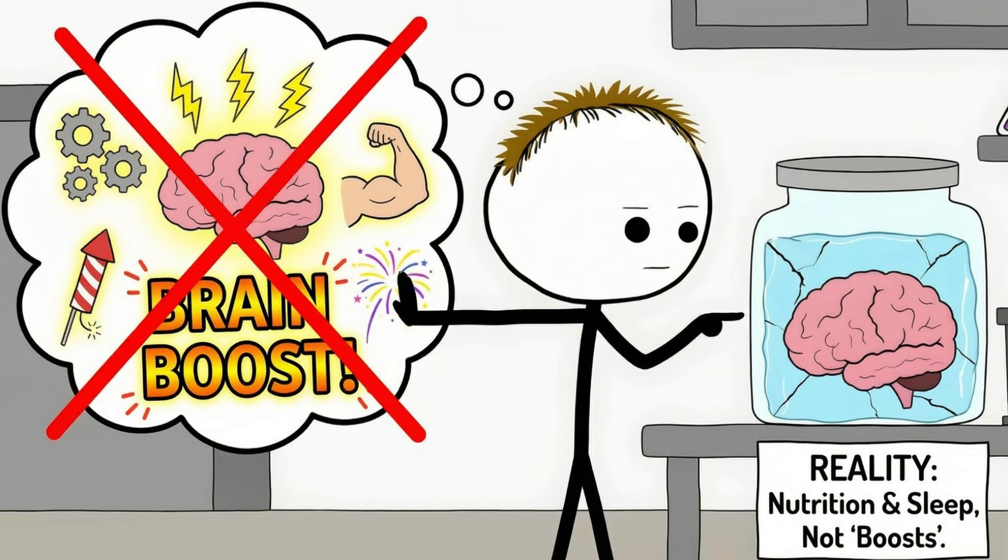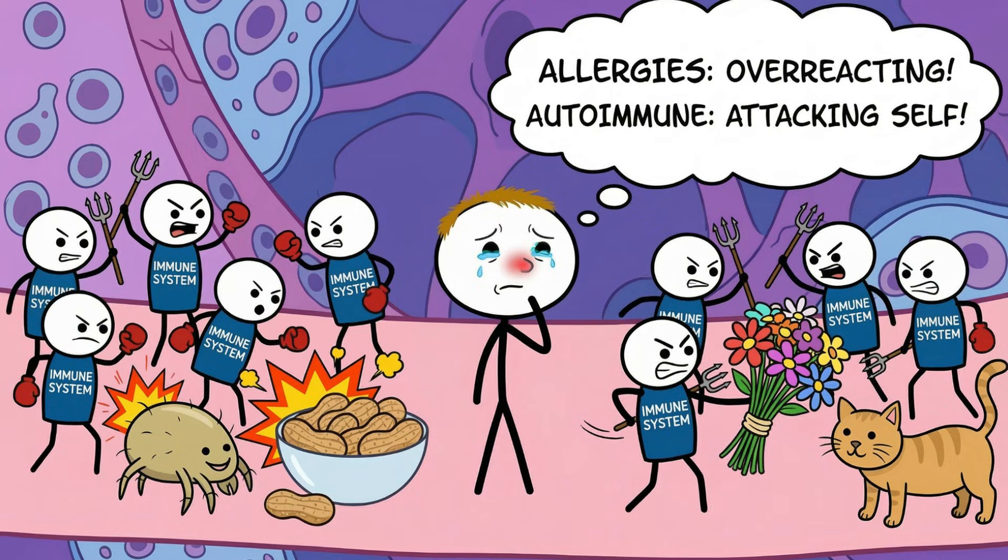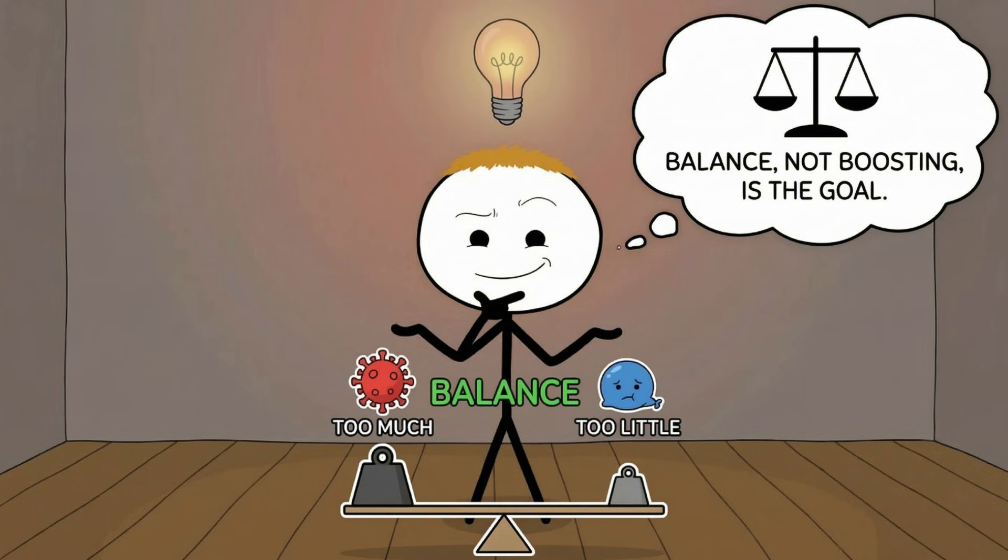Scientifically, the immune system doesn't want to be boosted. It wants to be regulated. Overactivity is just as dangerous as underactivity. Allergies, autoimmune diseases, and chronic inflammation are all examples of an immune system doing too much, not too little.